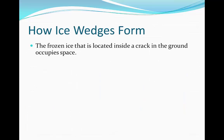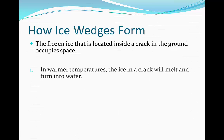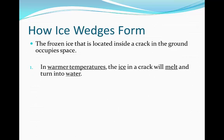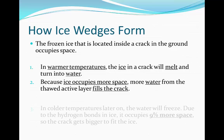How do they form? Well firstly, frozen ice is located inside a crack in the ground. This crack has ice inside it which is going to occupy space. When temperatures rise, the ice will melt and turn into water. Now ice occupies 9% more space than water does, so when it melts, more water will go into this crack due to the thawing of the active layer.